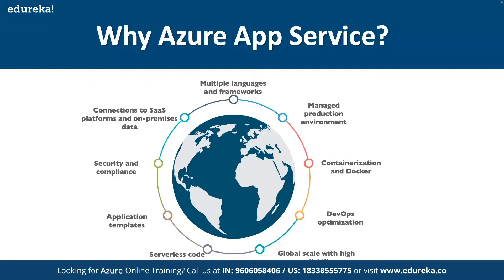App service supports containerization on Docker. We can containerize our application, host a custom Windows or Linux container, and run multi-container applications with Docker Compose. We also have DevOps optimization — we can set up continuous integration and deployment with Azure DevOps, GitHub, Bitbucket, Docker Hub, or the Azure Container Registry. With Azure, you get global scale with high availability — you can scale up or out manually or automatically.